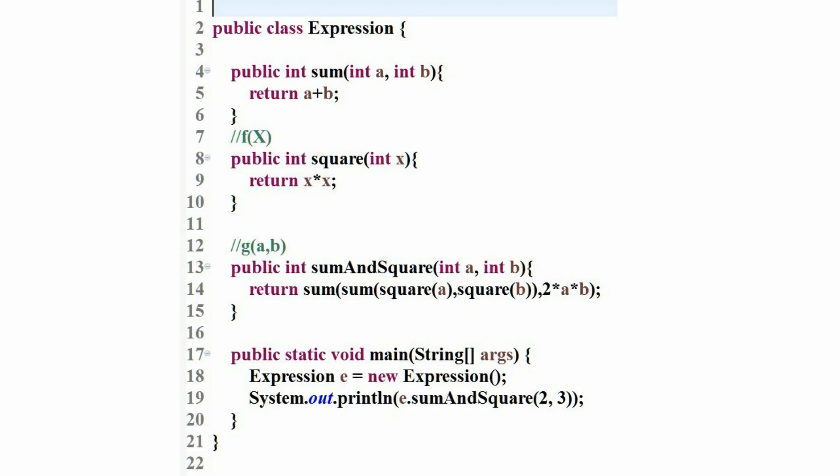So if you represent this in programming I can write the code something like this and you can see that I have represented square as a separate function then I have sum method and then I have finally g(a,b) representation as a sum square method. So this is how we can represent these functions into programming.